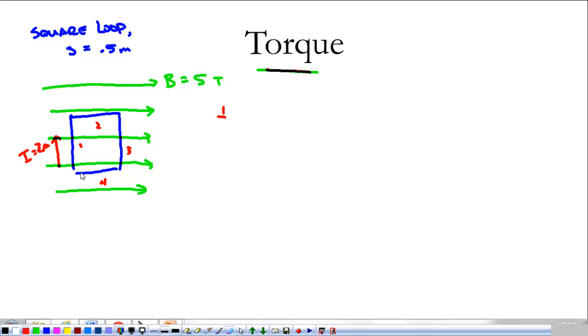So looking at 1, we have current running this way, running up. So we'll put our pointer finger up, our middle finger with a magnetic field. And so one thing that we know is that the force on 1 is into the page. And the magnitude of that force is equal to the current, 2 amps, times the length, 0.5 meters, times the magnetic field, 5 Teslas, times the sine of the angle between those, which is 90. So the force is into that page with a magnitude of 5 newtons.